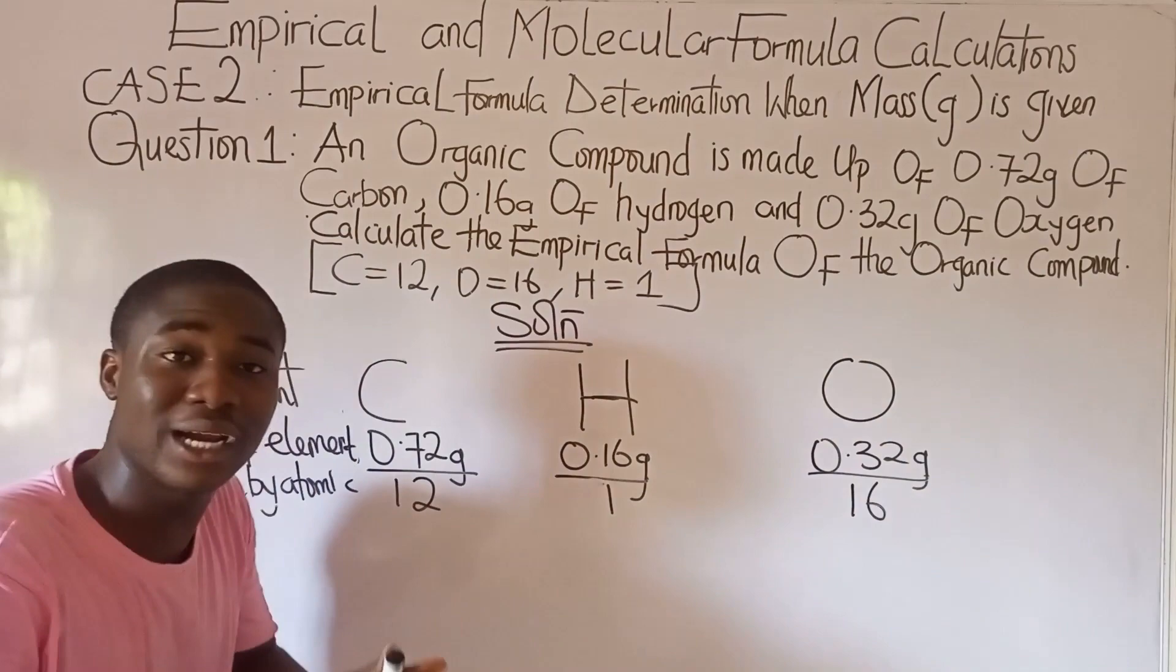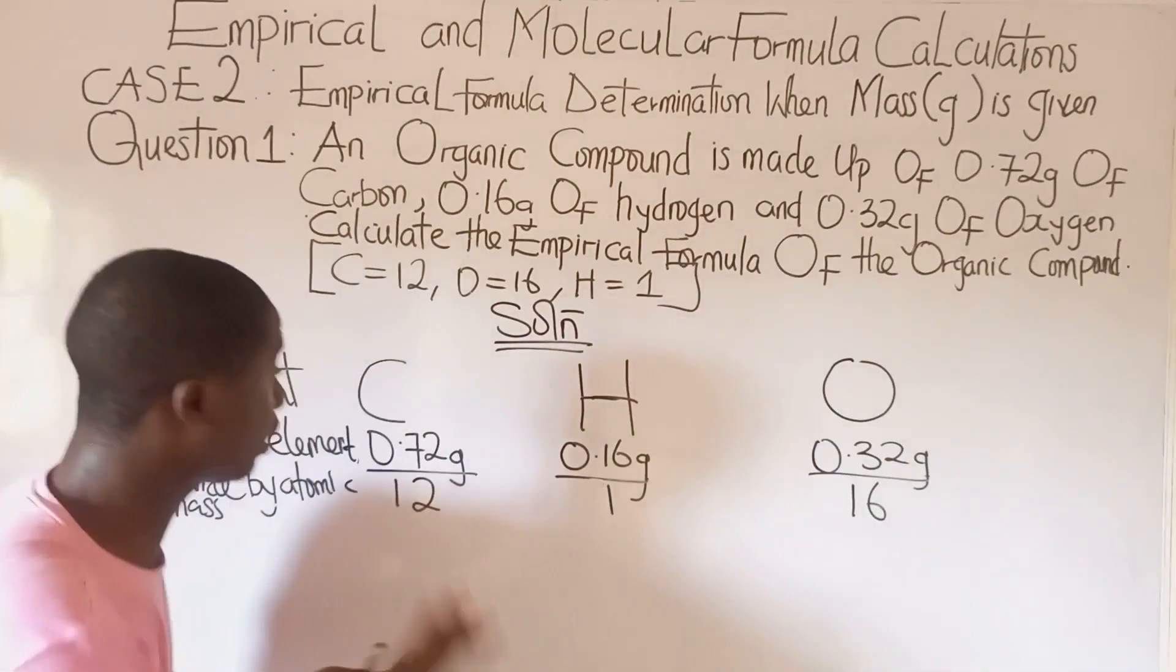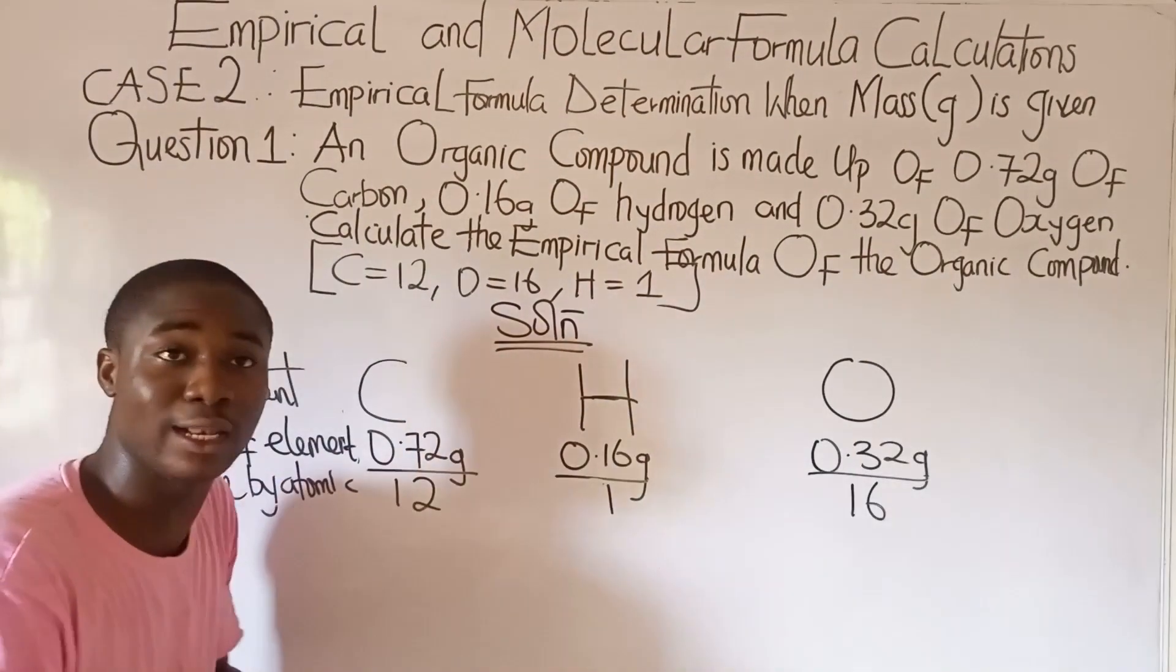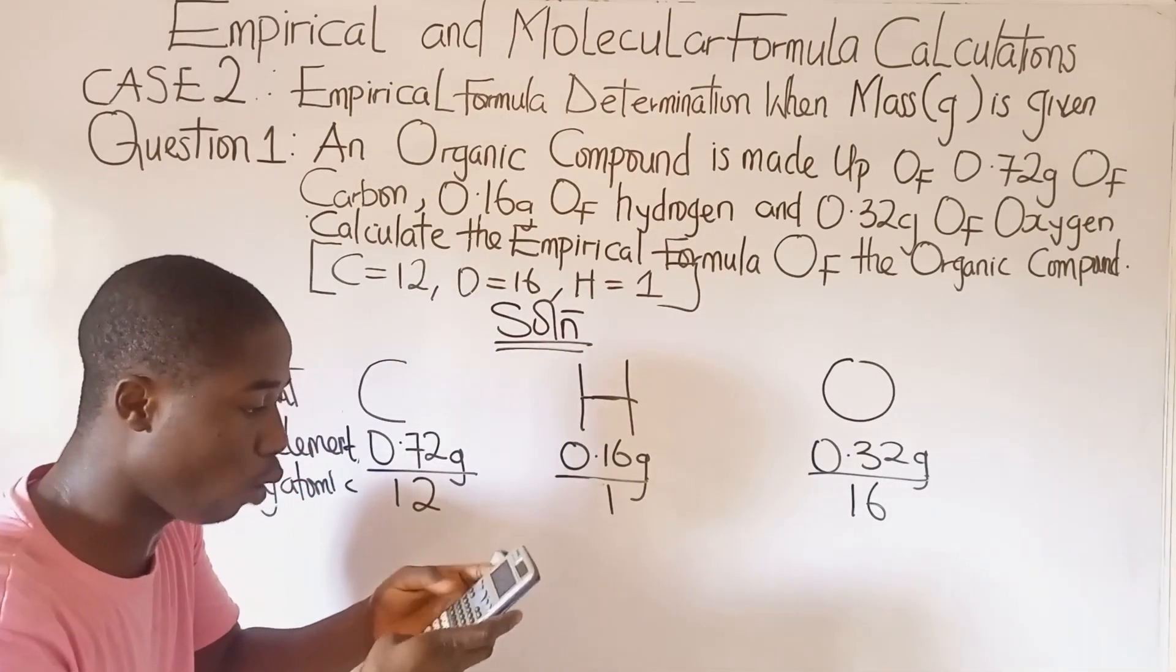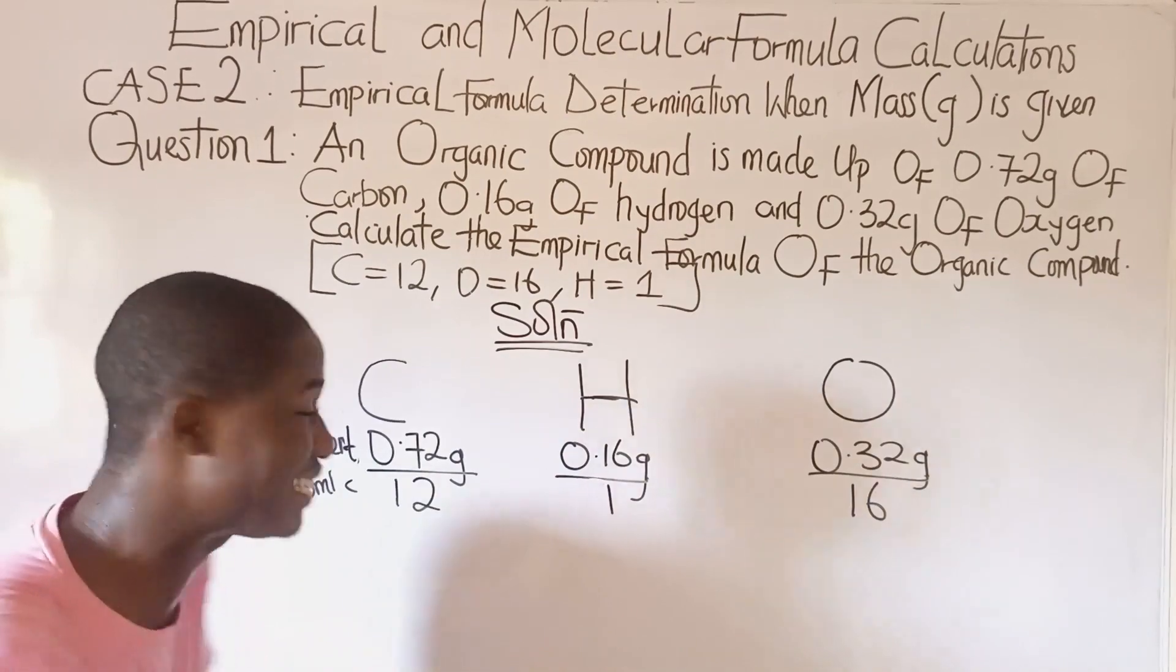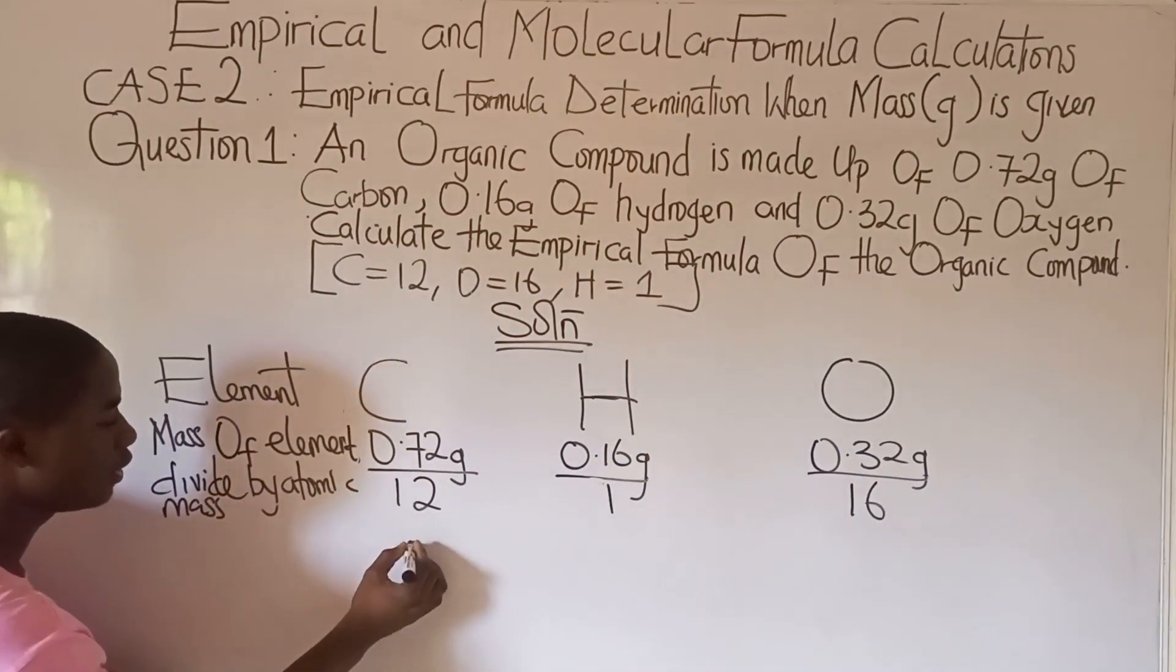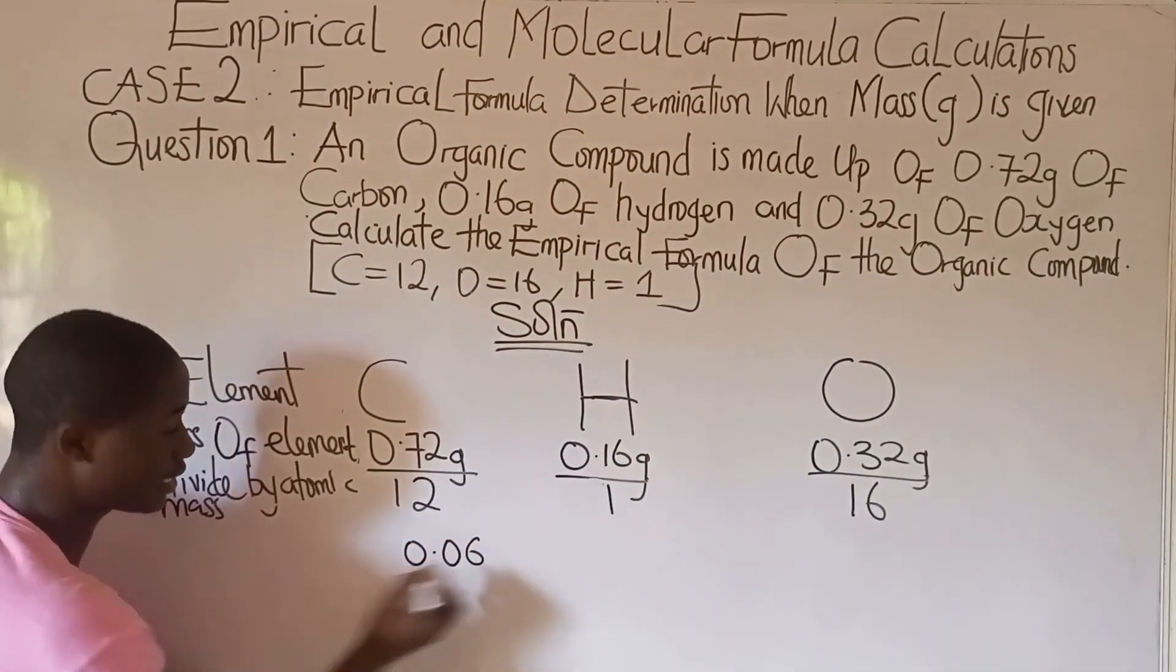First of all, let's bring all these values out. Let's quickly press our calculator to get a value for all these representations. For carbon is 0.72 grams over 12. That's 0.06. So here it becomes 0.06.